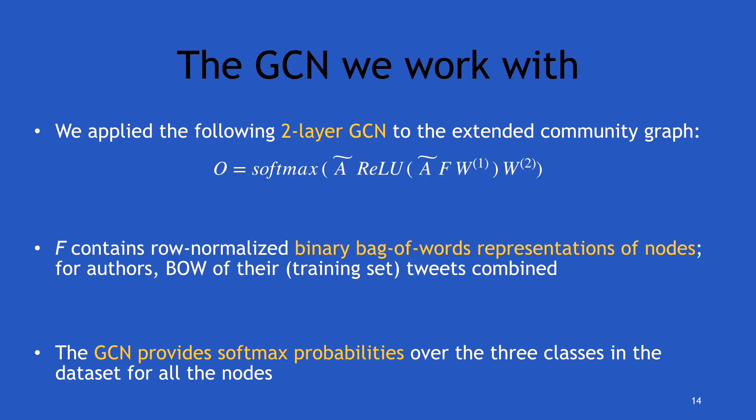The GCN we worked with is a two-layer GCN, because we wanted to model both the individual traits of authors and the linguistic traits of their community. As initial feature vectors, we used binary bag-of-words, keeping things as simple as possible when capturing linguistic traits. The output from our GCN is a softmax distribution for every node over the three classes in the dataset: racist, sexist, and clean.